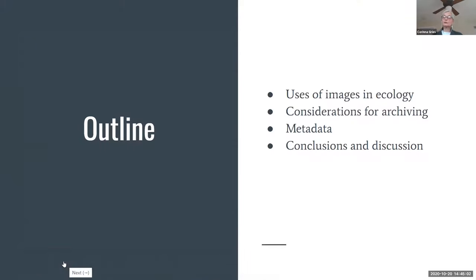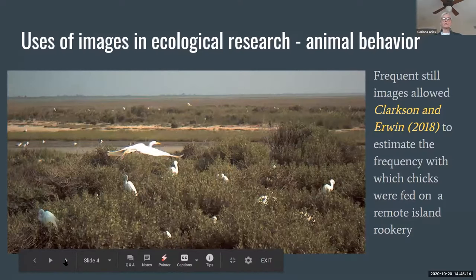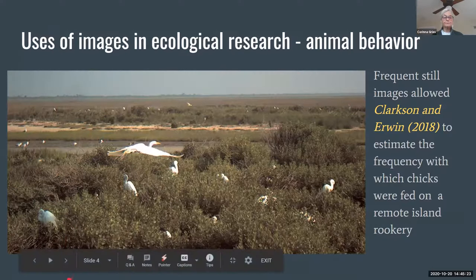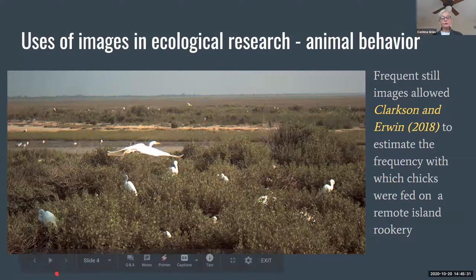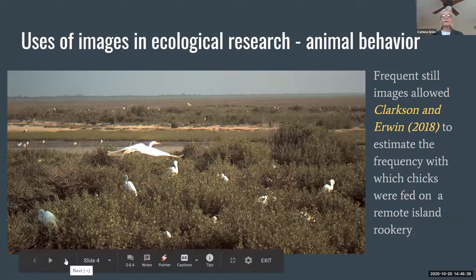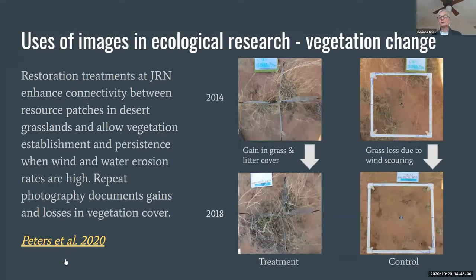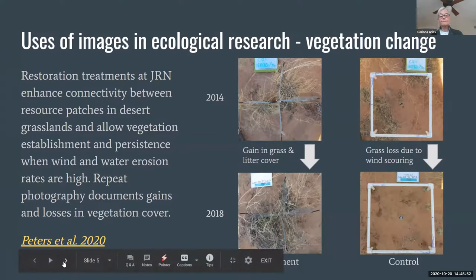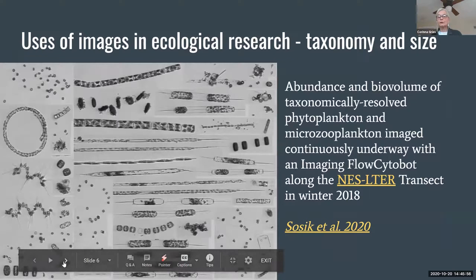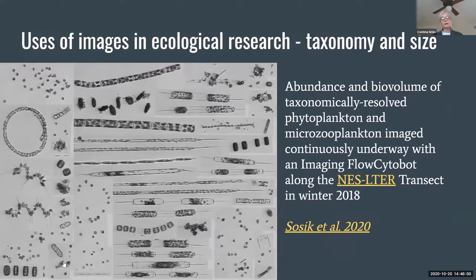These images are repeated at regular intervals and cover fairly large spatial ranges, with measurements represented by color, luminosity, shape, and context. Corina presented examples: images of a rookery used to identify feeding behavior; vegetation change images from 2014 to 2018 comparing treatment and control; a collection from an underwater image FlowCytoBot run on a transect; and underwater coral reef imagery from many years analyzing biodiversity in the same quadrants.